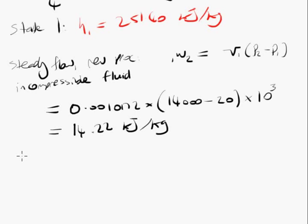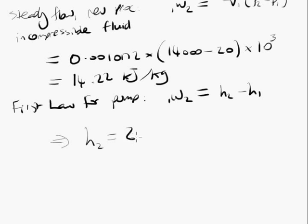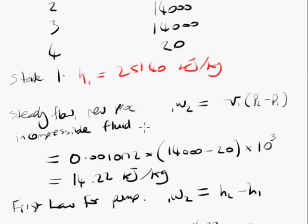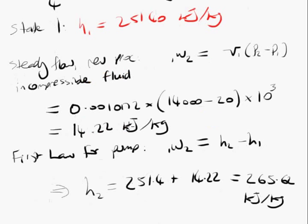Now, first law for the pump tells us if the pump is assumed to be adiabatic and if we neglect kinetic and potential energy changes, then the work that the pump does on the water is equal to the enthalpy rise of the water. So that gives us H2 is H1 plus 1w2 is 251.4 plus 14.22 is 265.62 kilojoules per kilogram. So that is state two sorted out.